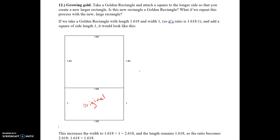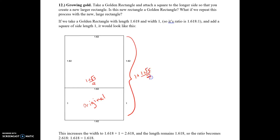If we use exact numbers, this would be (1 + √5) / 2. And this side over here would end up being 1 plus (1 + √5) / 2, which is the same as 2/2 plus (1 + √5) / 2. So this is actually a length of (3 + √5) / 2.